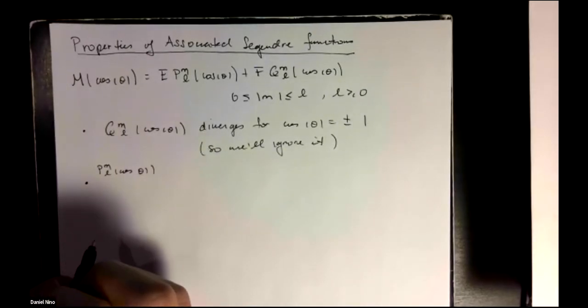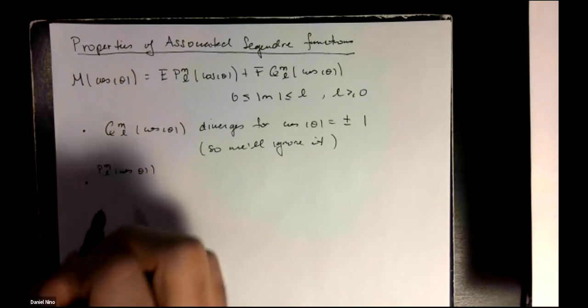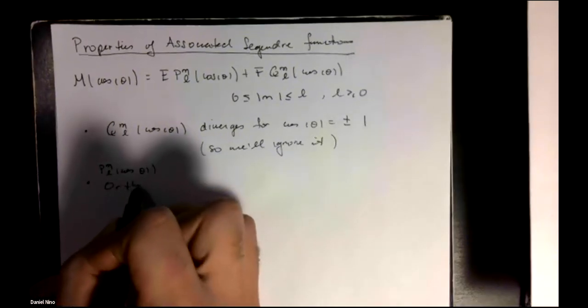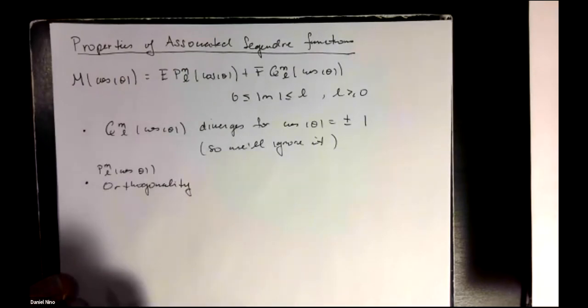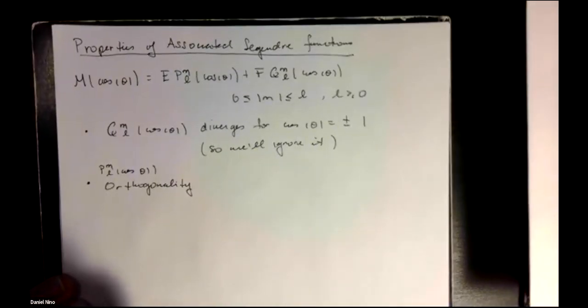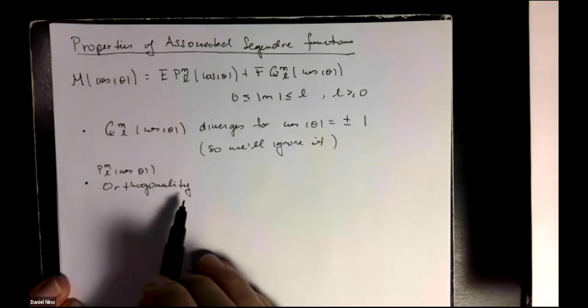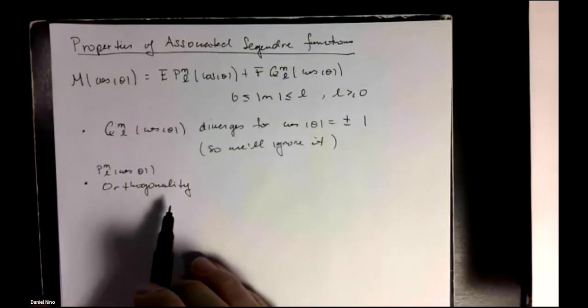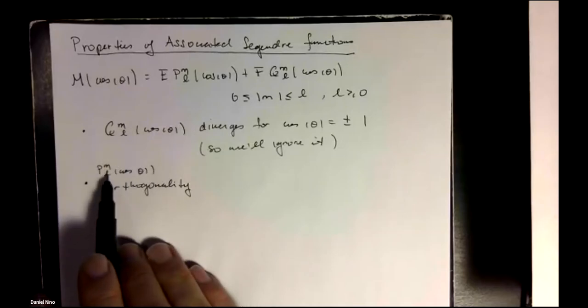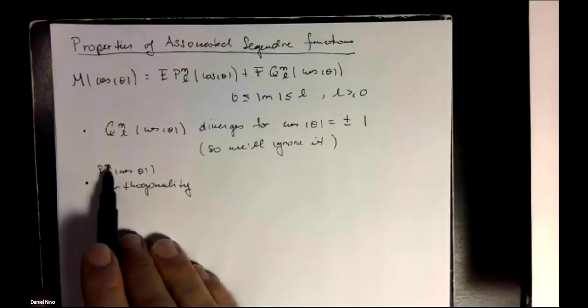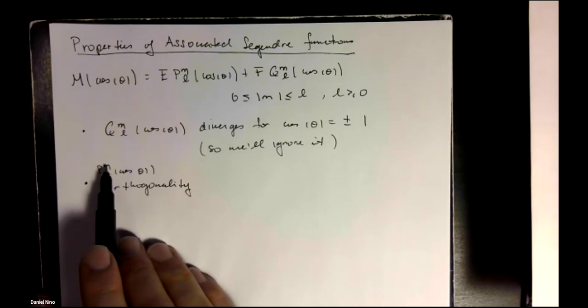And the most important property for us will be the orthogonality of these functions. And there's two orthogonality results. One of them is when the l's are different and the m's are constant. And the other one is when the l is constant and m is different.